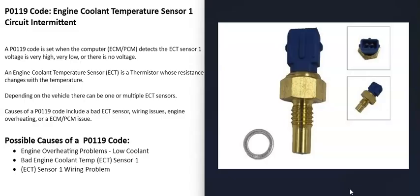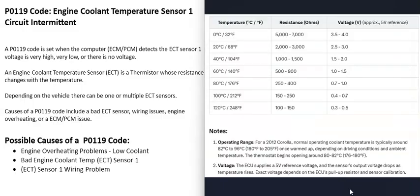These ECT sensors are thermistors — resistors whose resistance values change with temperature. You can use a multimeter to test them by looking up the specifications for that sensor for your specific vehicle. For example, on a 2012 Toyota Corolla, at 68 degrees Fahrenheit the sensor should read between 2,000 and 3,000 ohms. If it's outside that range — higher or lower — then you know it's bad and needs to be replaced.